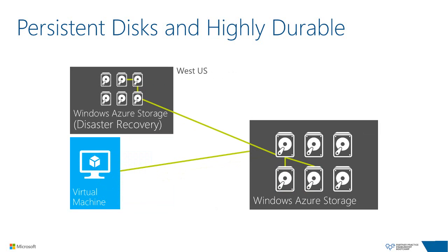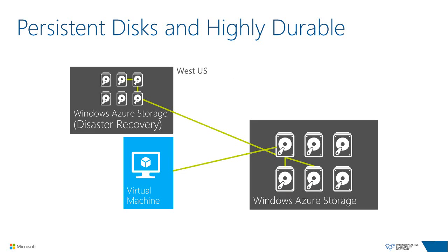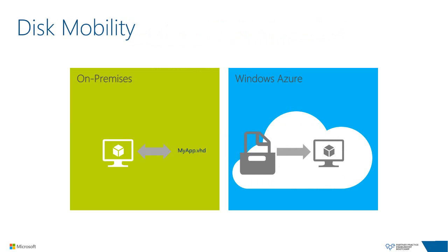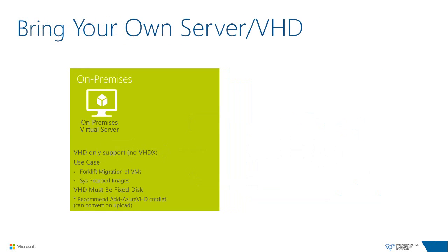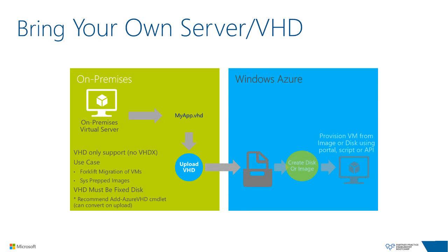If the physical server your virtual machine is running on fails, Windows Azure will automatically detect this and move your virtual machine to a new physical server. Windows Azure also provides tooling to easily move Hyper-V based disks between on-premises and the cloud. To bring your own server, note that Windows Azure currently only supports VHD, not VHDX. The recommended solution for uploading VHDs is to use the Add-AzureVHD PowerShell cmdlet, which supports converting from dynamic to fixed disks on the fly and only uploads written bytes.